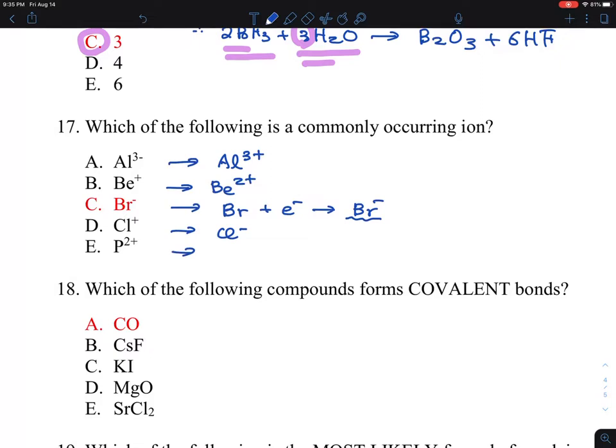Phosphorus is in the fifth column. So therefore, either they like to lose five electrons, or they can take three electrons to make essentially octet rule. So therefore, this is the correct one to be shown up here.